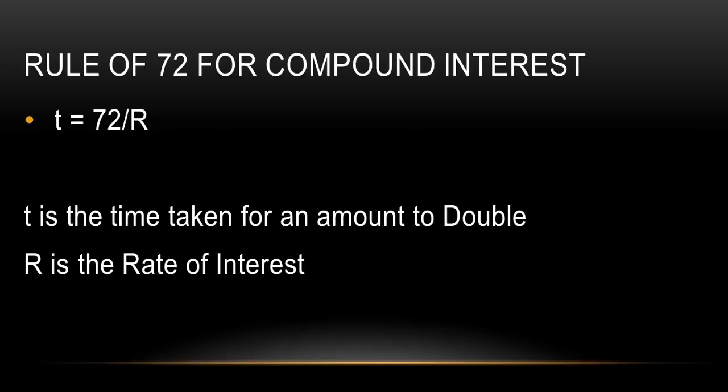The first trick is called the Rule of 72 for compound interest. The formula is t = 72 / r. This formula comes in handy when a particular amount doubles and the rate of interest is r. Suppose we are given the rate of interest and we need to find the time in which the particular amount will double — then the time period is equal to 72 / r.